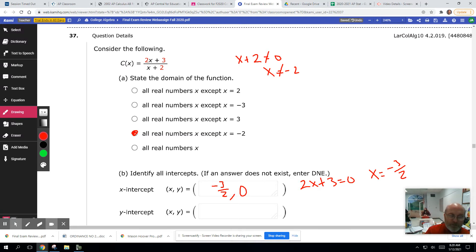Then the y-intercept, we're going to plug in zero. So this is going to be C of 0. So that's going to be 2 times 0 plus 3 over 0 plus 2. So the y-intercept is going to be 3 halves. So that's going to be 0, 3 halves, or you could have put 1.5.